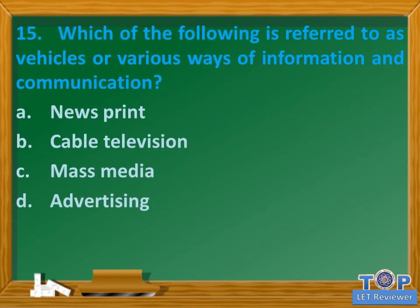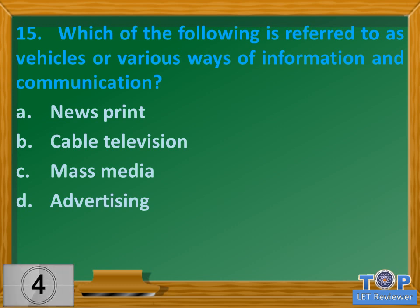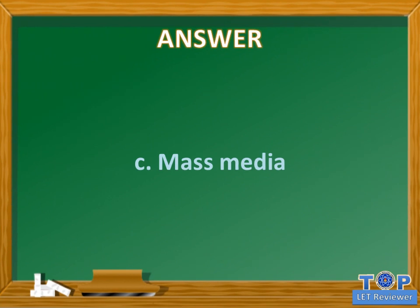Question number fifteen: Which of the following is referred to as vehicles or various ways of information and communication? A. Newsprint. B. Cable television. C. Mass media. D. Advertising. Answer: C. Mass media.